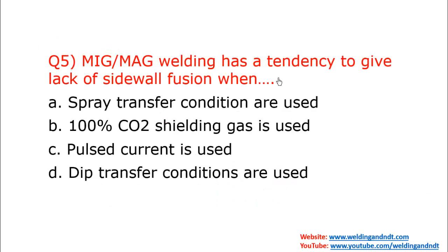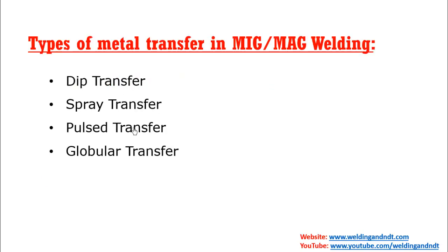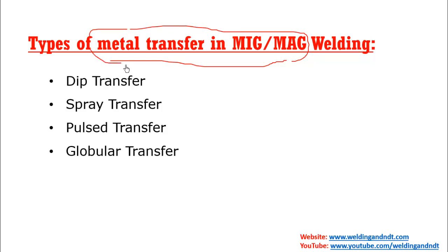Question five: MIG and MAG welding has a tendency to give lack of sidewall fusion. The conditions given are: spray transfer, 100% CO2 shielding gas, pulse current, and dip transfer conditions. The most appropriate answer is dip transfer conditions. In MIG or MAG welding there are four major types of metal transfer: dip transfer, spray transfer, pulse transfer, and globular transfer.